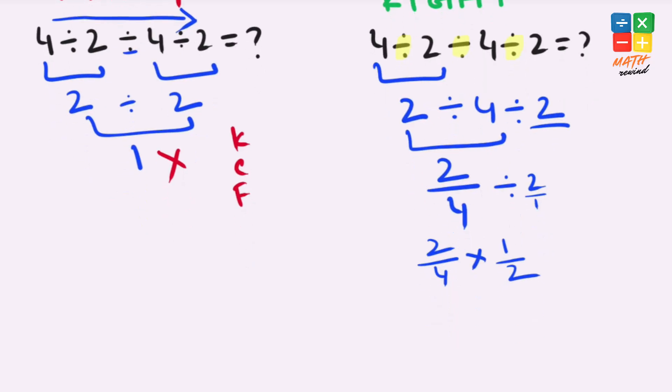And when we solve this part of the expression, 2 and 2 cancel out each other, and that leaves us with 1 over 4, which is the final and correct answer to this problem.